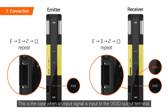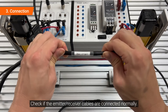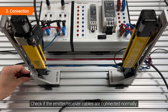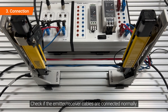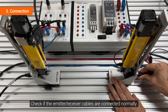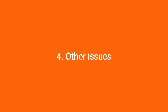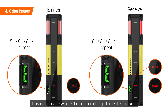This is the case when an input signal is input to the OSSD output terminal. Check if the emitter and receiver cables are connected normally. This may also be the case where the light emitting element is broken.